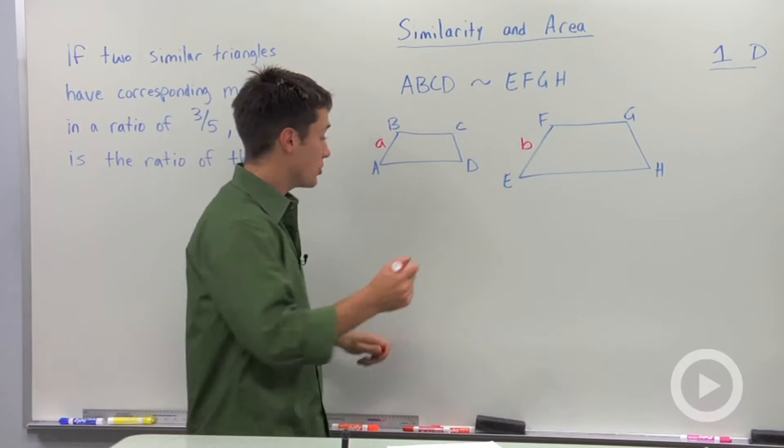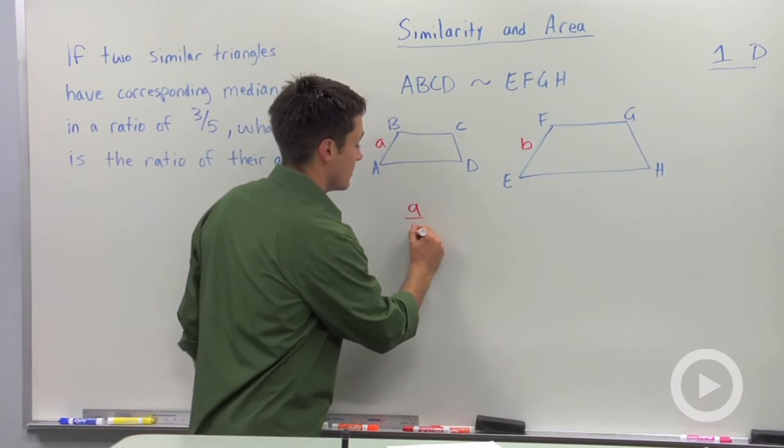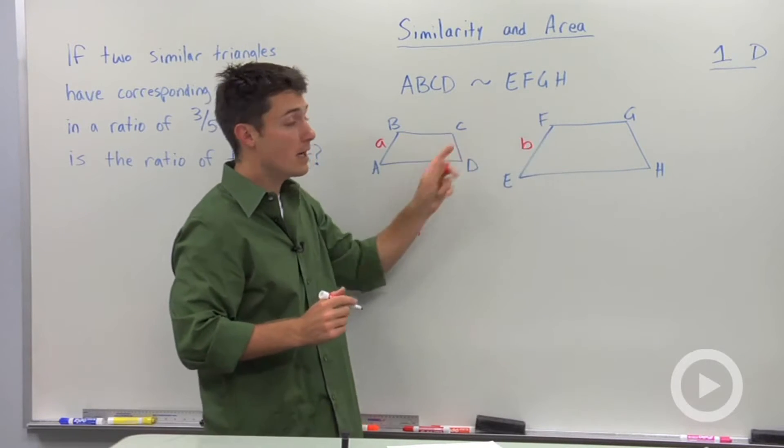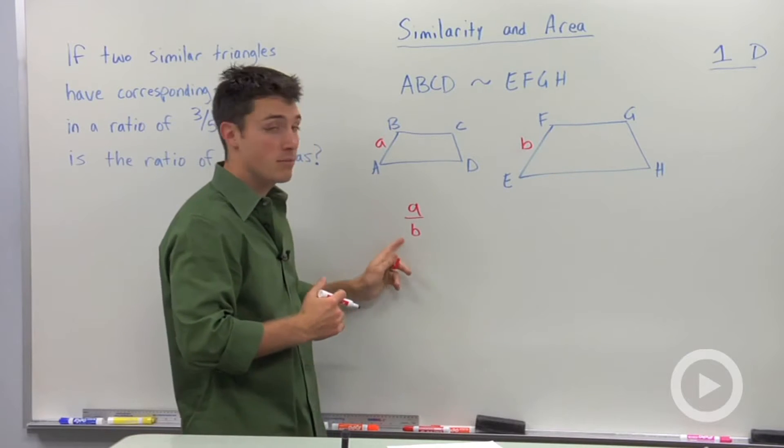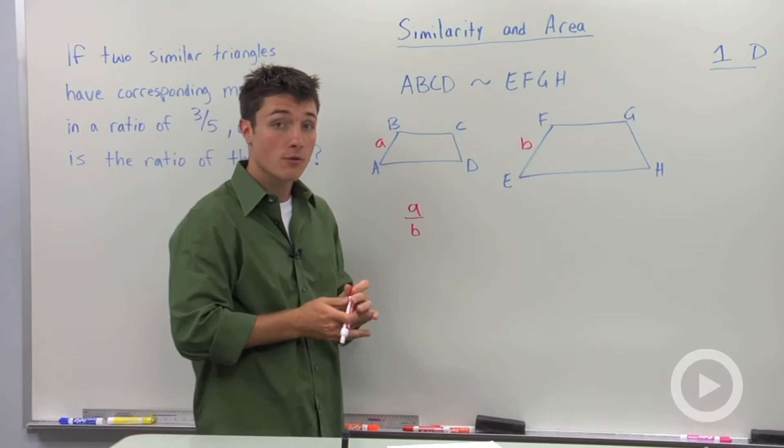I know that that ratio is going to be constant for all of the corresponding sides. That ratio would be A to B, or whatever those numbers are for their actual lengths.